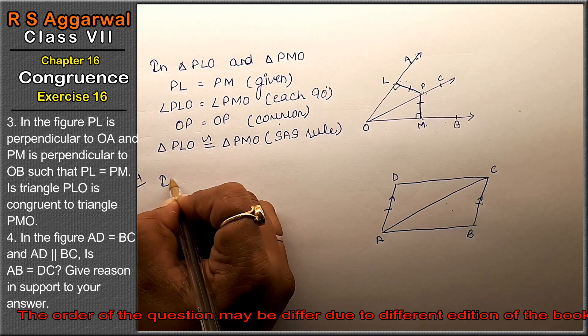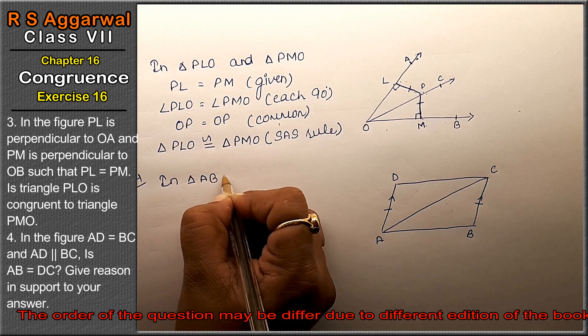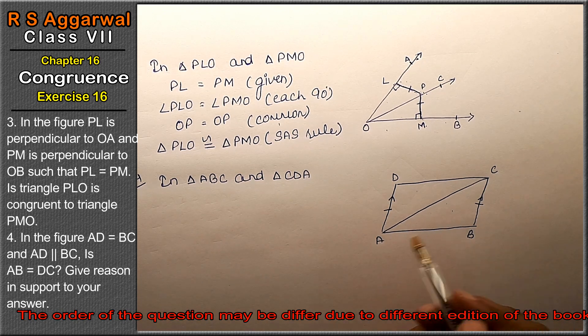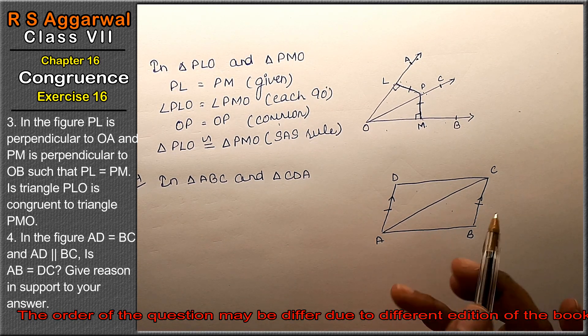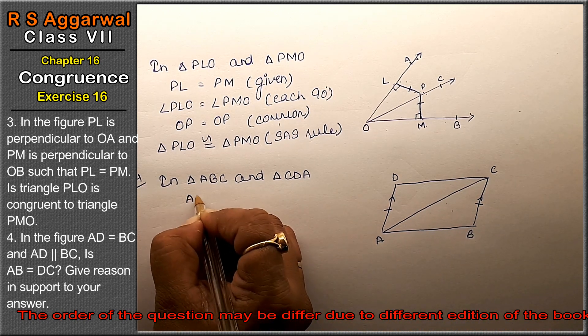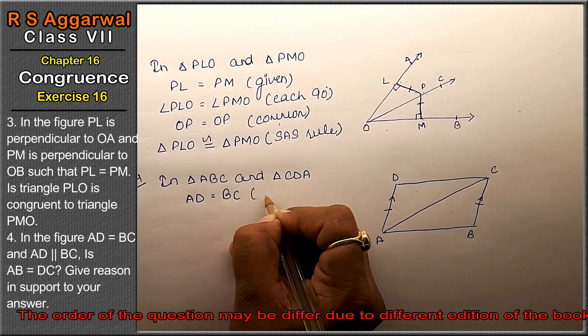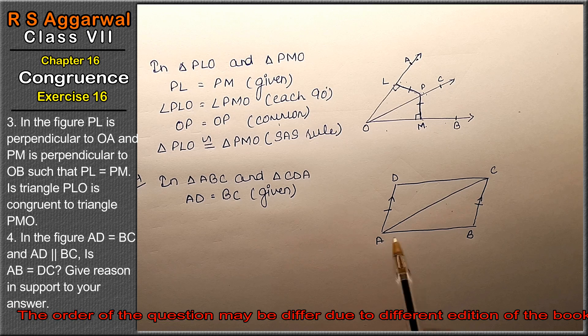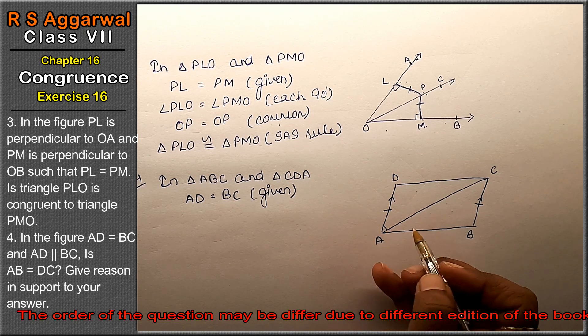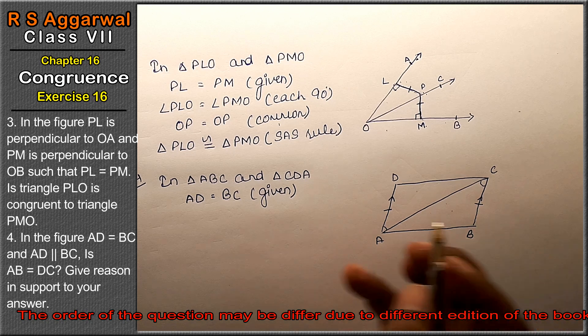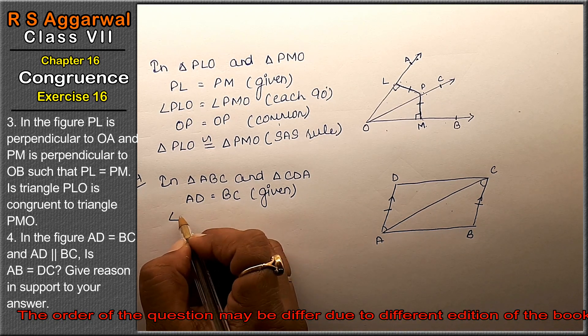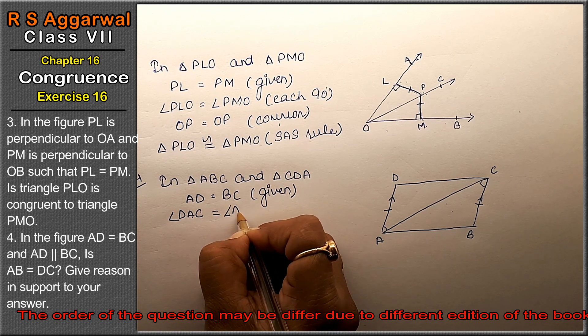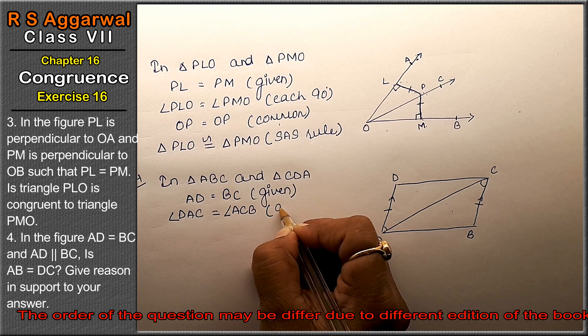Two triangles are formed here. Let's take triangle ABC and triangle CDA. Now, we are given that AD equals BC. Since we have two parallel lines, angle DAC equals angle ACB because alternate angles are equal.